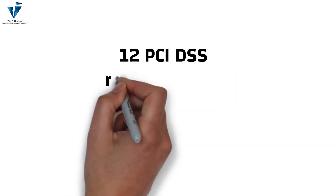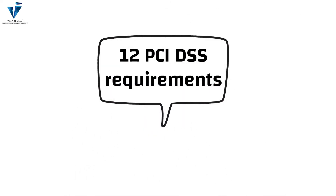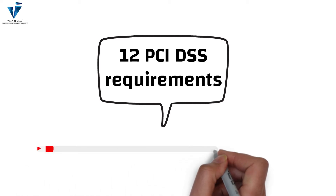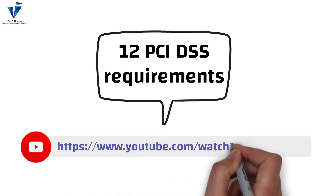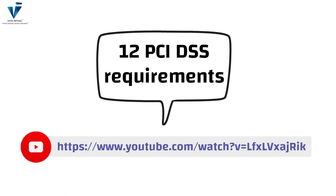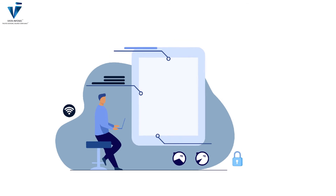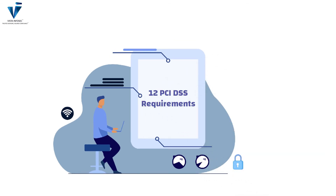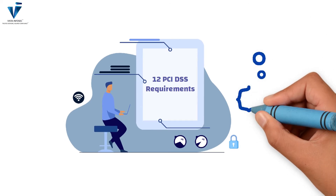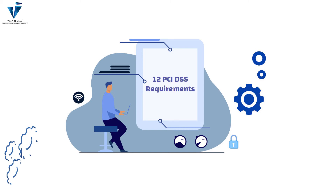Maintaining a policy that addresses information security for all personnel is essential in an organization. These are the 12 PCI DSS requirements briefly shared with you. If you wish to learn more about these requirements in detail, you can check out our previous expert video on the 12 PCI DSS requirements on our YouTube channel. Now that we have understood the PCI DSS requirements, let us ensure that these requirements are met by following the compliance checklist described below.